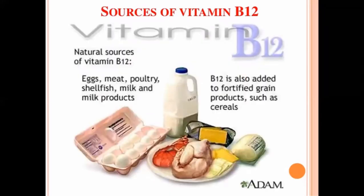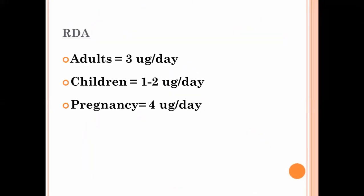The natural sources of vitamin B12 include eggs, meat, poultry, shellfish, milk, and milk products. Vitamin B12 is also added to fortified grain products such as cereals. The daily required allowance of vitamin B12 is 3 micrograms per day in adults, 1 to 2 micrograms per day in children, and 4 micrograms per day during pregnancy.